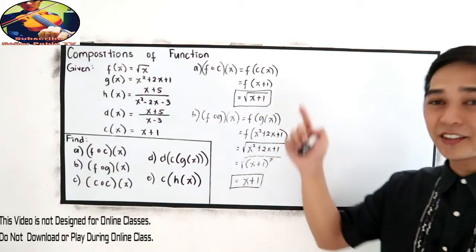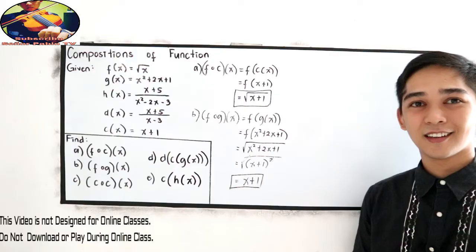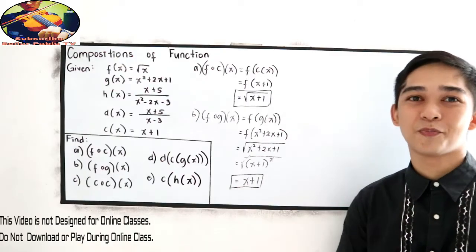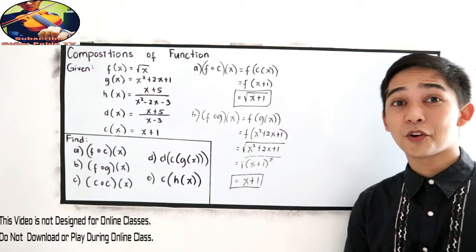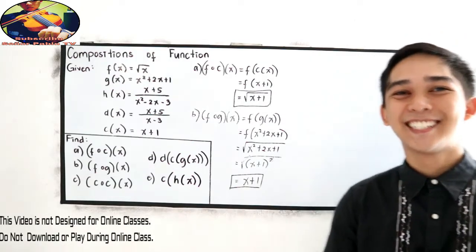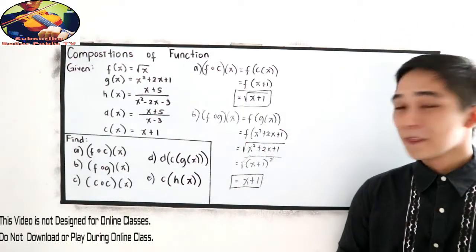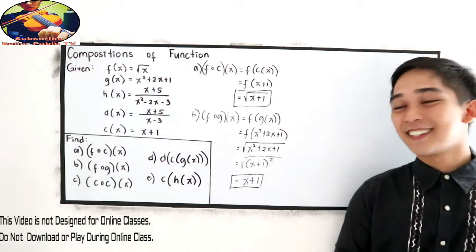So, f composed of g of x is equal to x plus 1. We are done in letter A and in letter B. If you want to solve C, D, and E, again, you can pause the video. And of course, don't forget to subscribe in this channel if you learn something. Let us proceed in letter C.